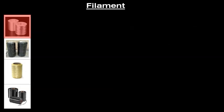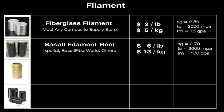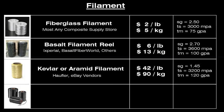For the filament, you can use fiberglass, basalt, kevlar, aramid, carbon fiber, or other continuous filament materials. Fiberglass is the lowest cost per pound filament on the list. Basalt filament is processed from volcanic rock and is slightly stronger than fiberglass filament, although a bit more costly. Kevlar and aramid filament is lighter and stronger than basalt but also more costly.